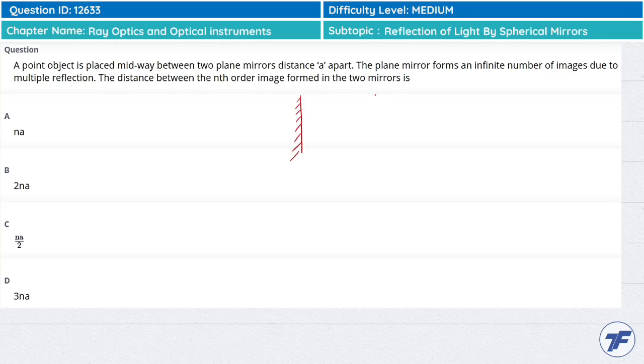You have two mirrors that are distance 'a' apart. The point object is placed midway between these two plane mirrors.